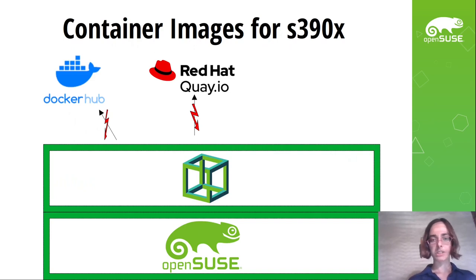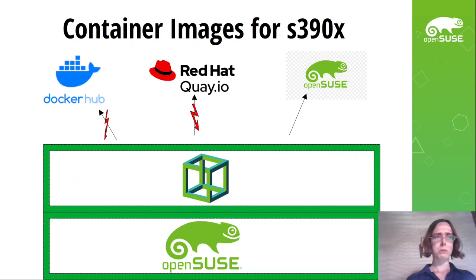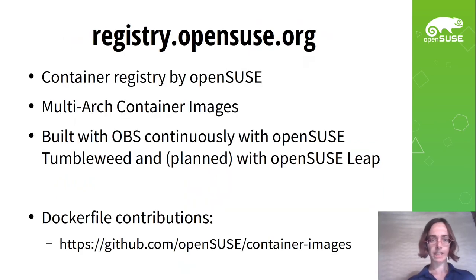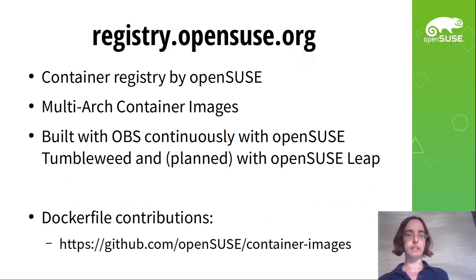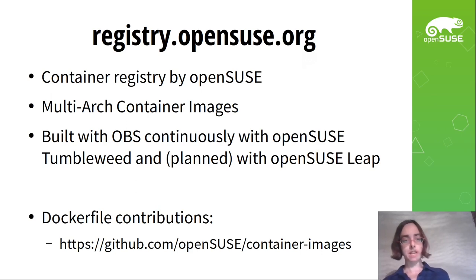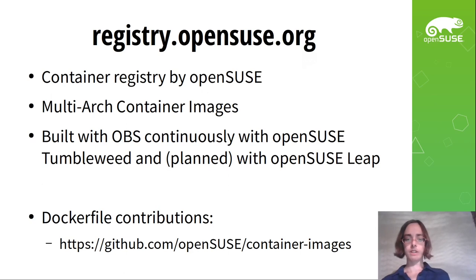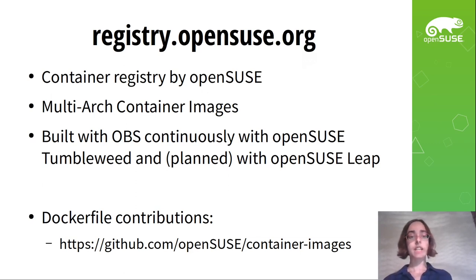Therefore we thought about our own solution so that users can use container images for S390X. There is a possibility to use OpenSUSE container images created by us. We have registry.opensuse.org — a container registry by OpenSUSE — and we provide multi-arch container images. OBS is continuously building container images based on OpenSUSE Tumbleweed, and it is planned to do that for OpenSUSE Leap in the coming year too. So we can provide Tumbleweed images and in the future Leap-based images.